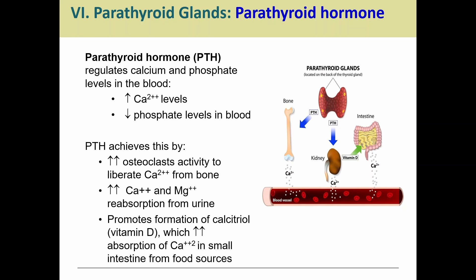PTH helps regulate calcium as well as phosphate levels in the blood. It increases calcium levels and lowers phosphate levels. It does this by increasing osteoclast activity — essentially breaking bone down to release calcium from the bone matrix — and by telling the kidneys to retain and reabsorb calcium as well as magnesium from the urine.